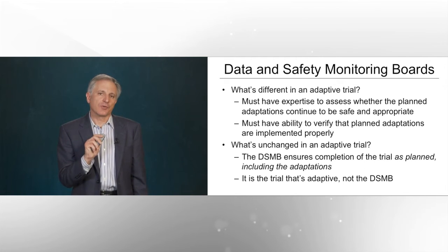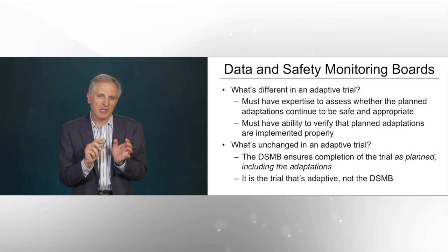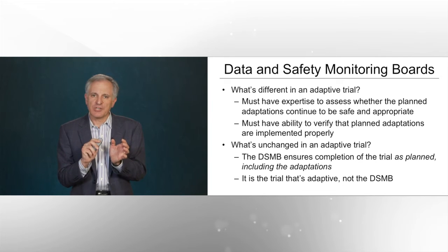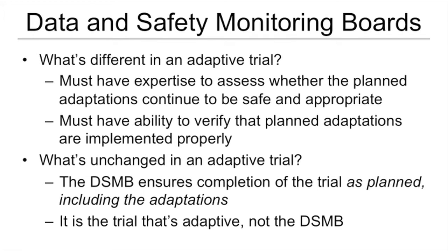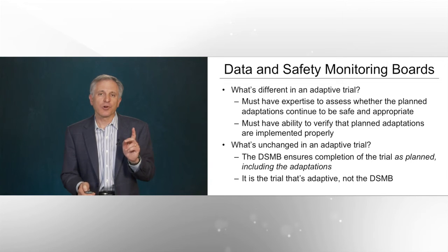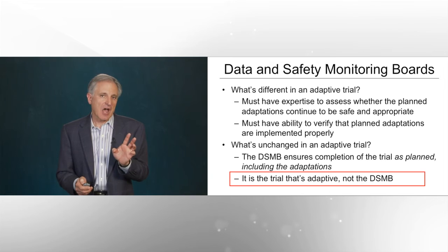So what is different about a DSMB overseeing an adaptive trial versus a DSMB overseeing a traditional trial? The difference is that the DSMB must have the expertise to assess whether the planned adaptations continue to be safe and appropriate, and they must have the ability to verify that the planned adaptations are being implemented properly. But perhaps what's more important is what is unchanged for an adaptive trial. The DSMB continues to have as a primary role the goal of ensuring the completion of the trial as planned, and in this case that includes the adaptations. In other words, it is the trial that is adaptive, it is not the DSMB.